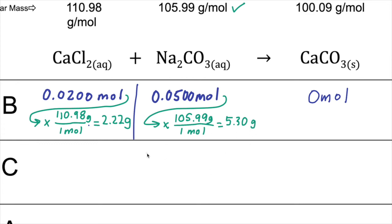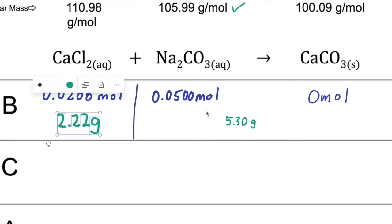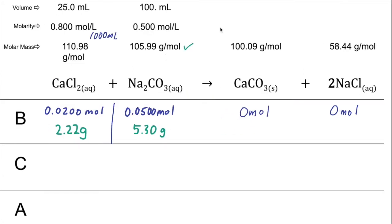So 5.30 grams is the mass of sodium carbonate dissolved in solution. The total mass before the reaction is 2.22 grams plus 5.30 grams, which equals 7.52 grams. This total mass should equal the total mass on the after line, confirming conservation of mass.